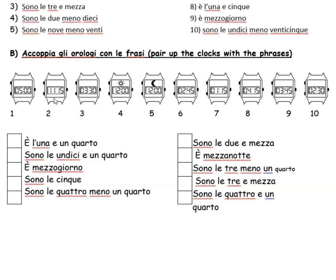3:30 would be sono le 3 e mezza, so that's this one here — that one should have number three. Number four: it's got a sunshine so it's midday — that you're looking for, so è mezzogiorno. Number five is midnight — mezzanotte. Number six: 2:45 — so you're looking for the phrase which says 3 minus a quarter.